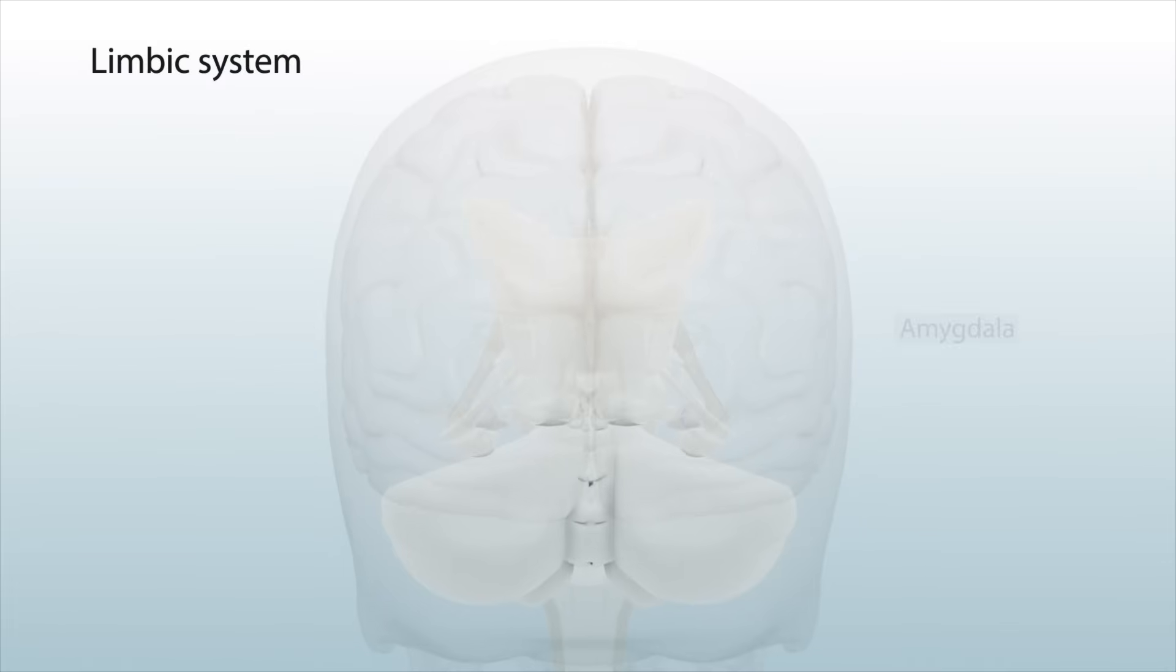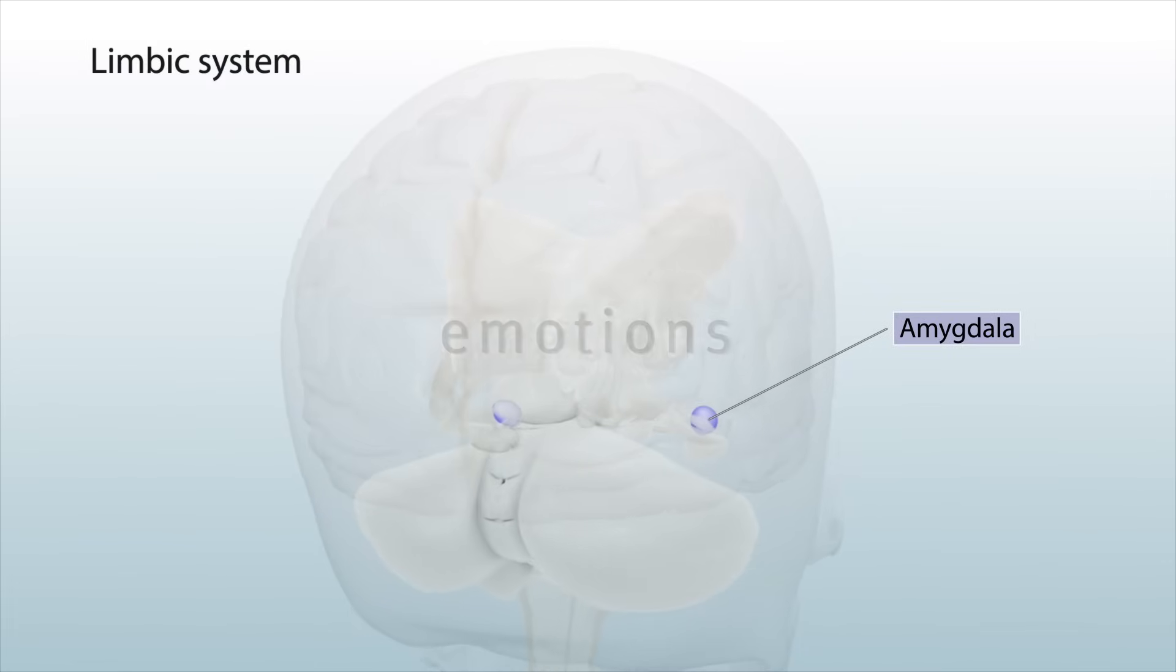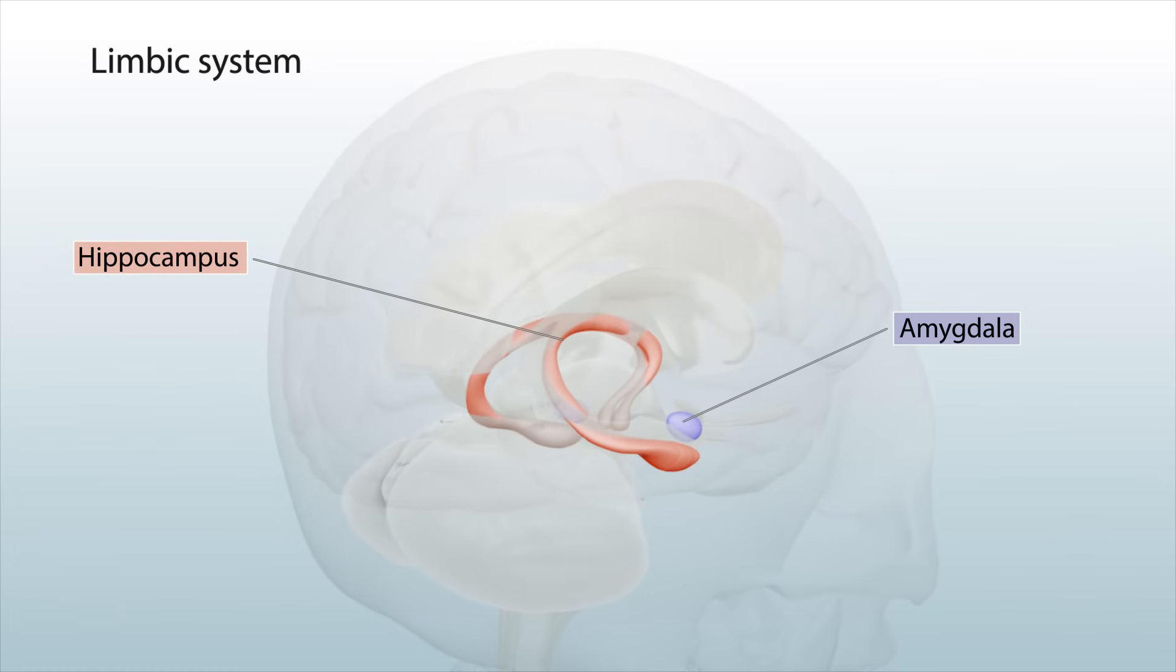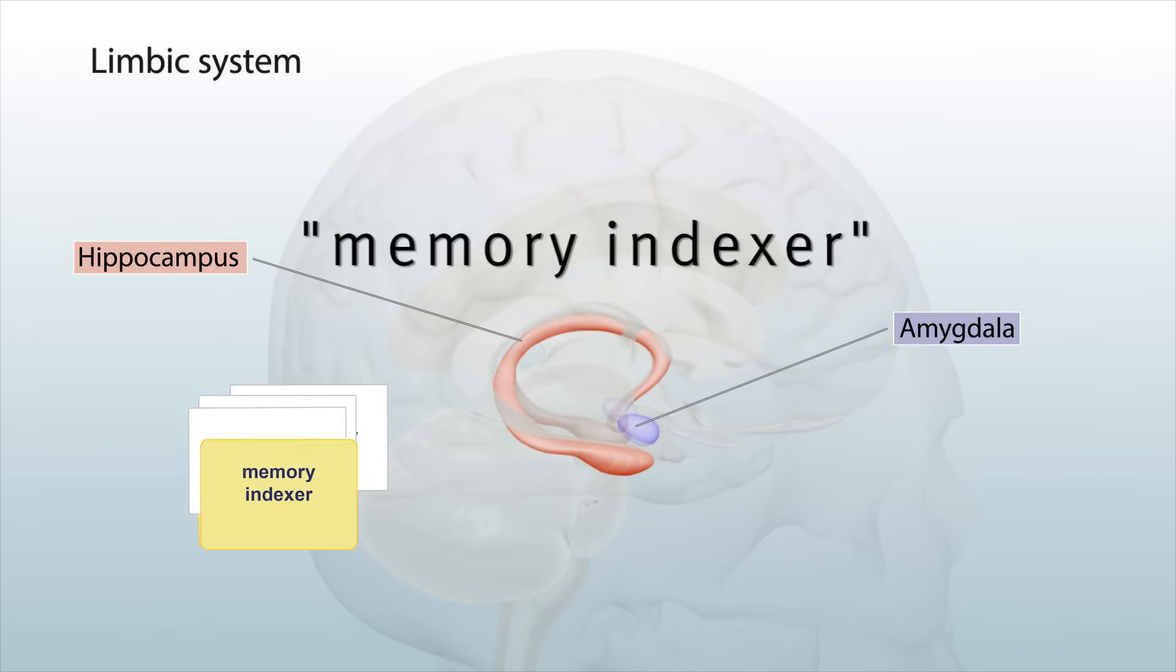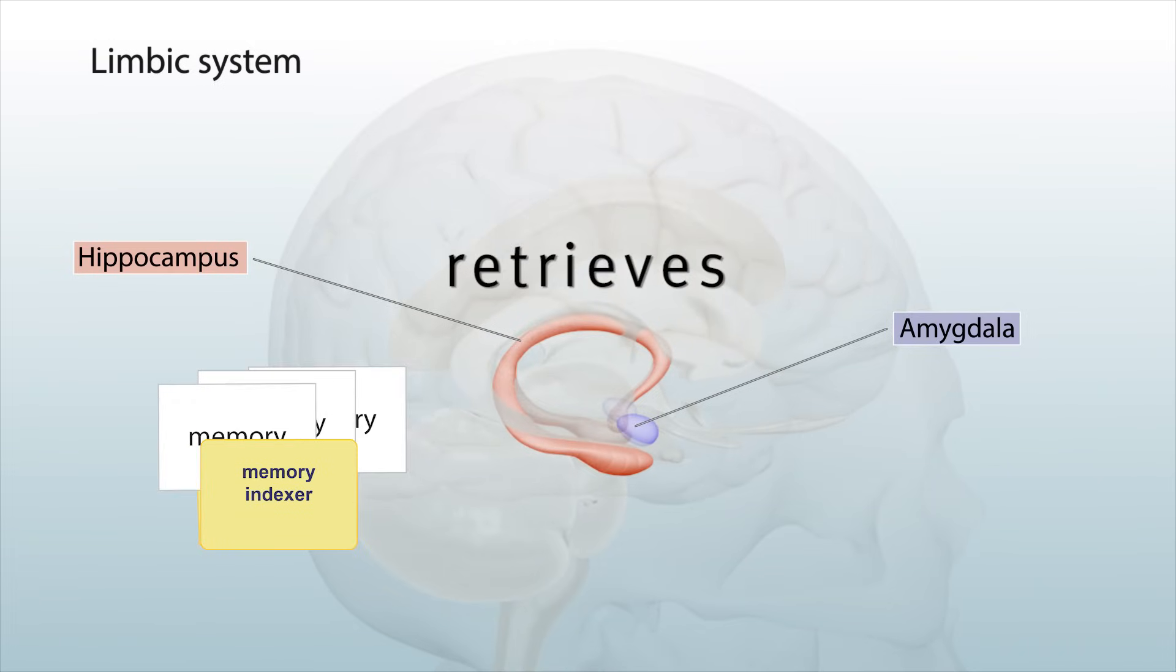The limbic system includes the amygdala, which processes emotions, and the hippocampus in the temporal lobe, which is like a memory indexer that sends memories to certain parts of the brain for storage and retrieves them when you need them.